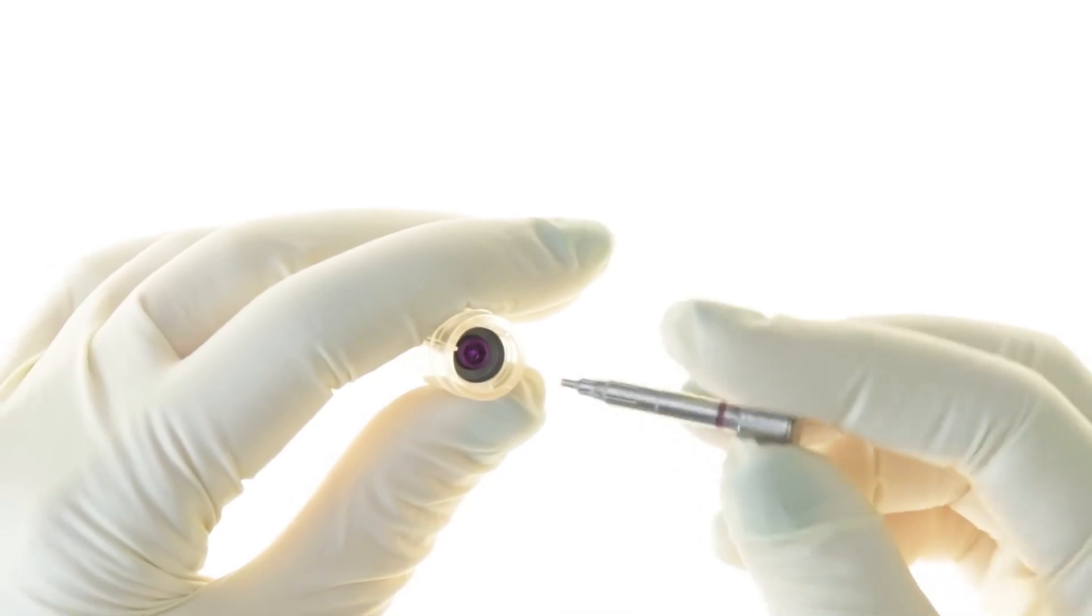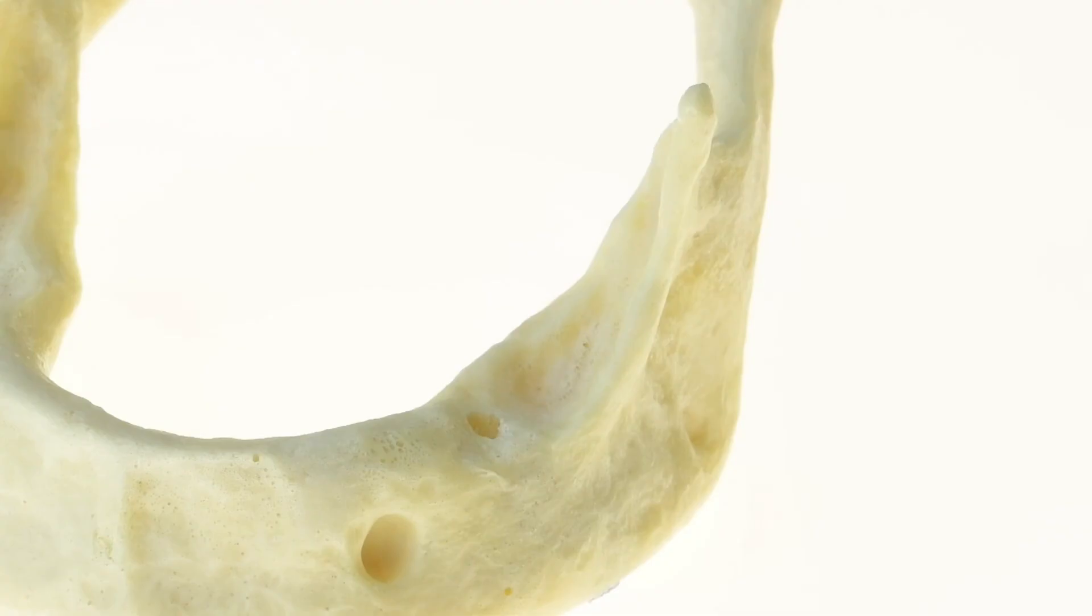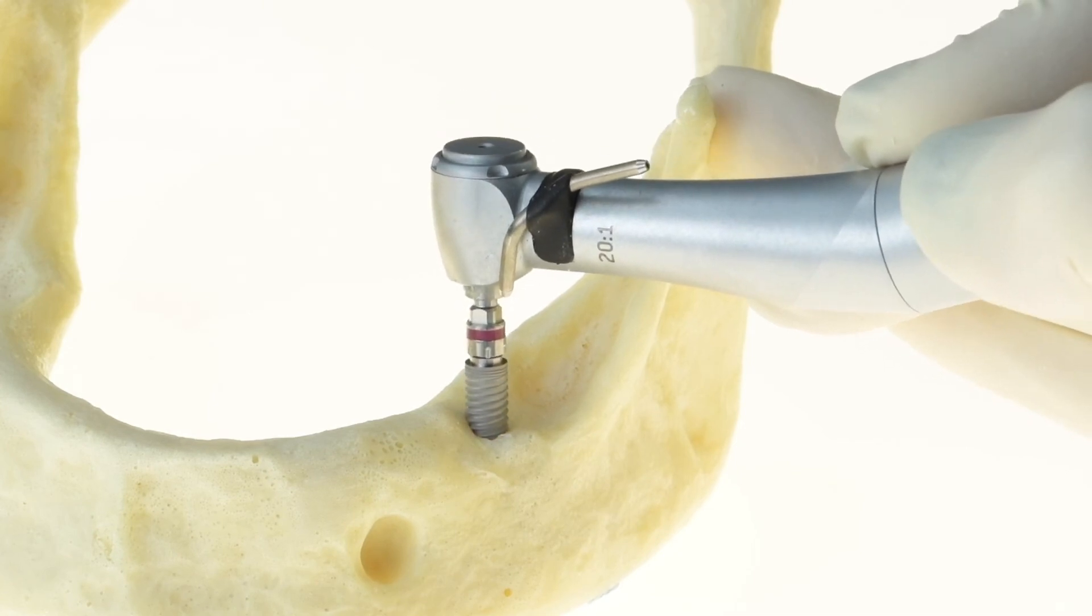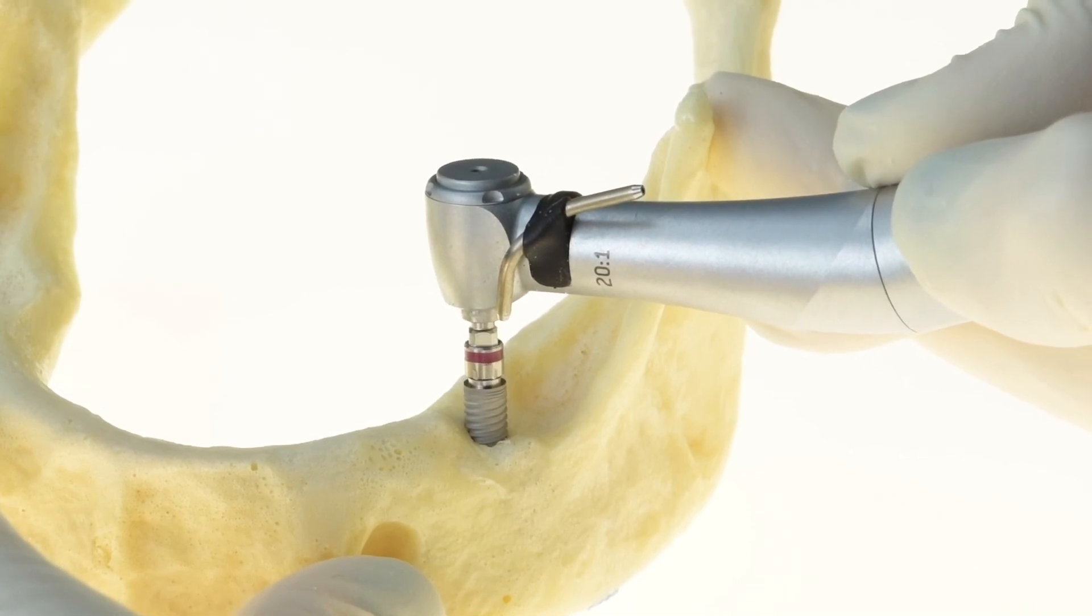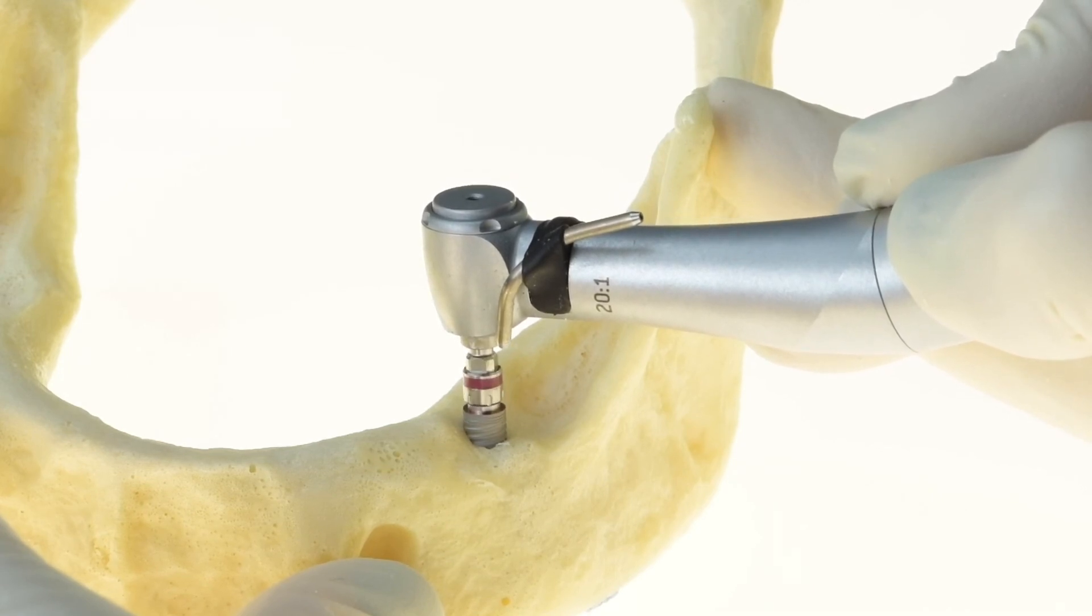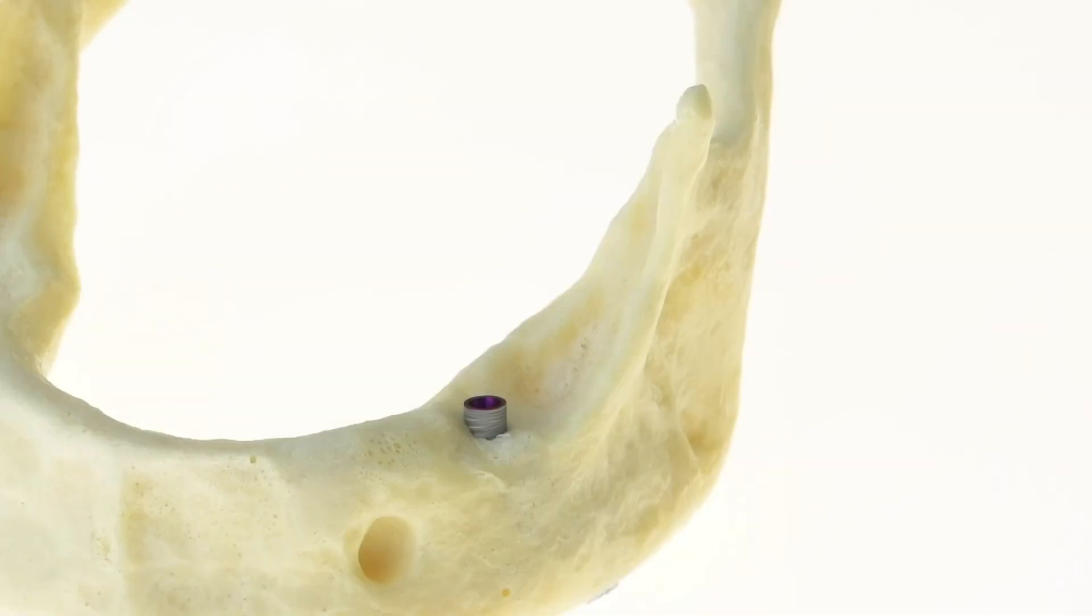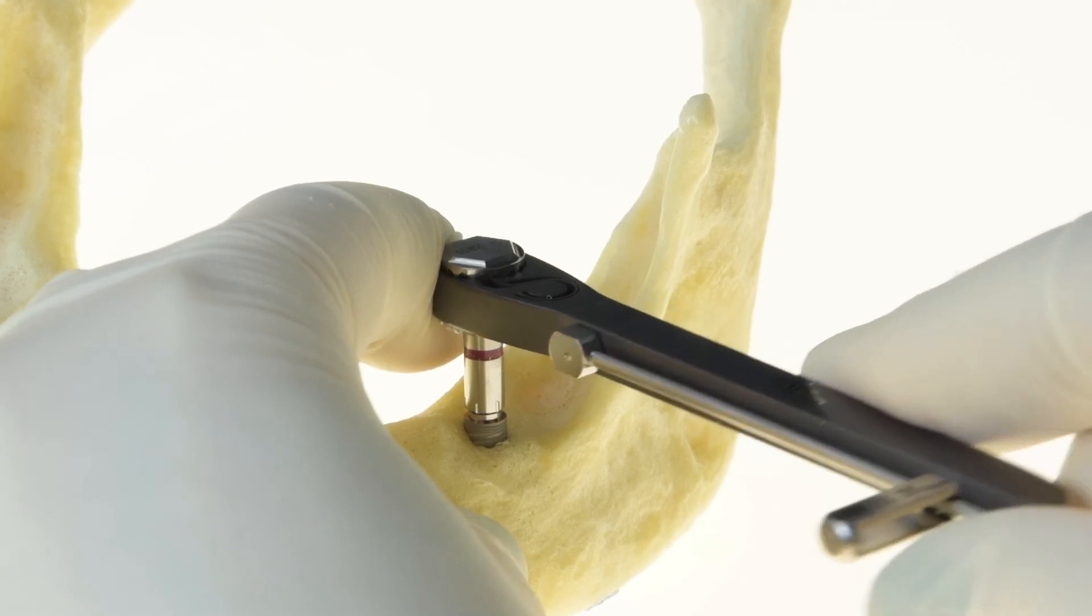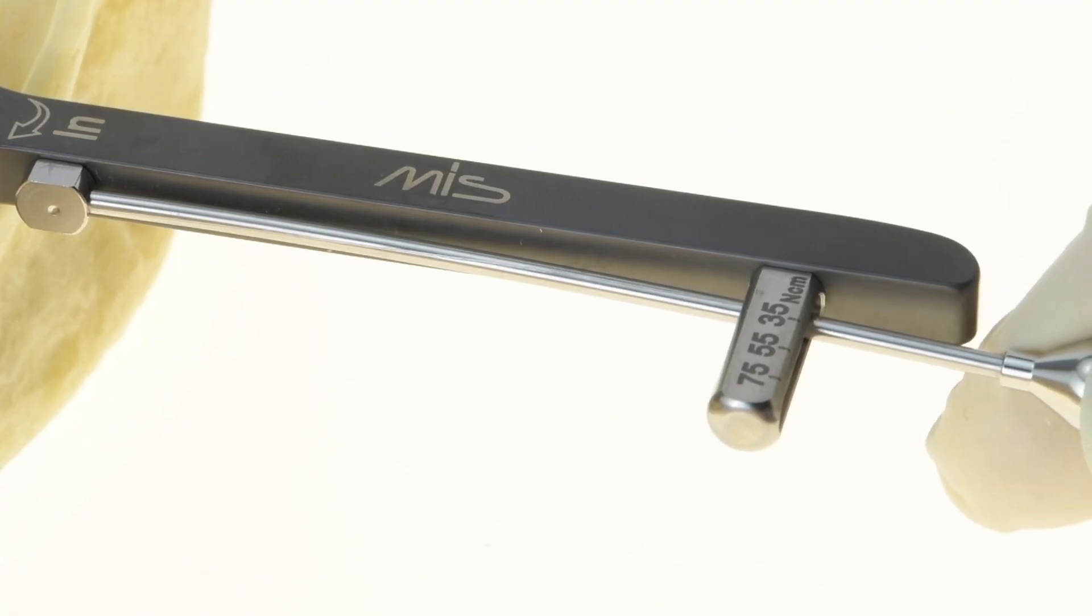Use the insertion tool to remove the implant from the sterile packaging. To complete the placement, we use a torque wrench. The recommended torque for MIS implants is 35 to 60 ncm.